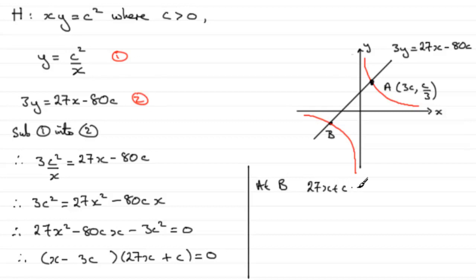We just know that at B, at B we can see that 27X plus C must equal 0. And it follows from that, that X must be equal to minus C over 27.